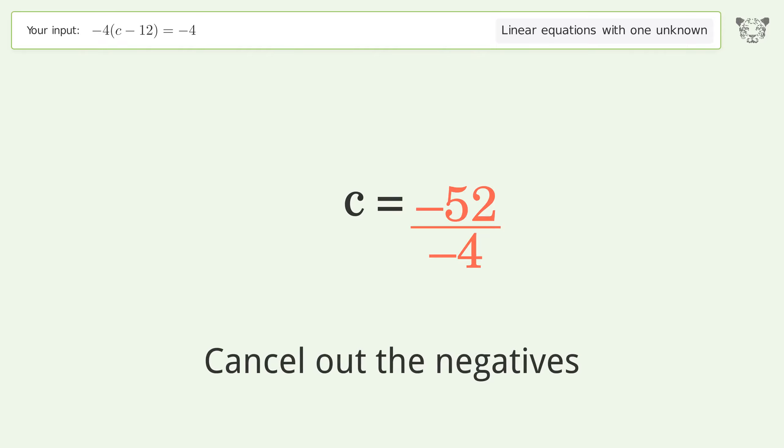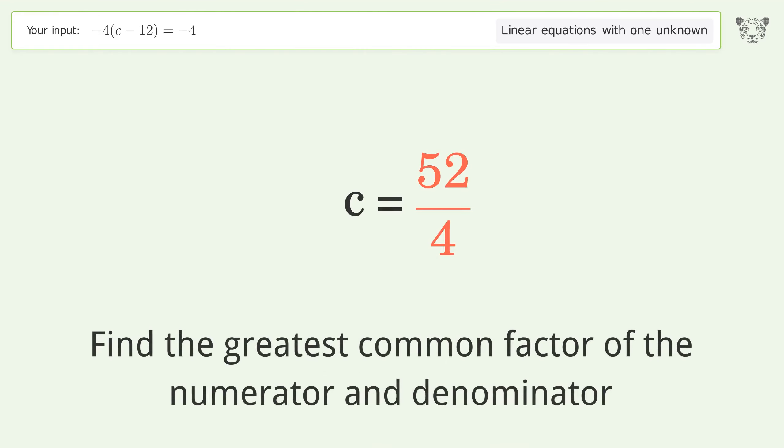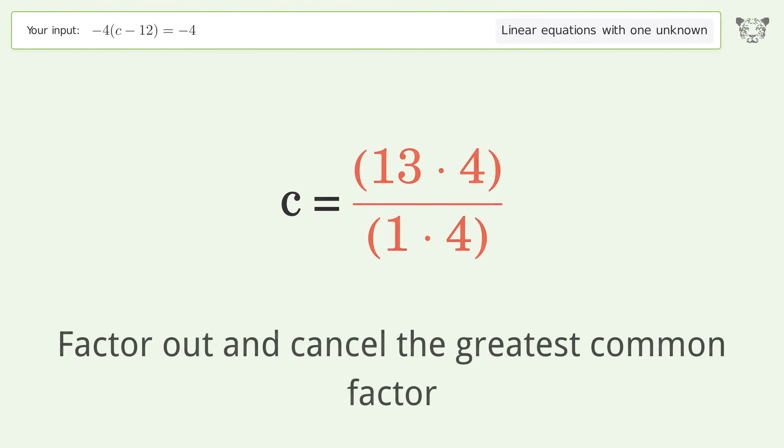Cancel out the negatives. Find the greatest common factor of the numerator and denominator. Factor out and cancel the greatest common factor.